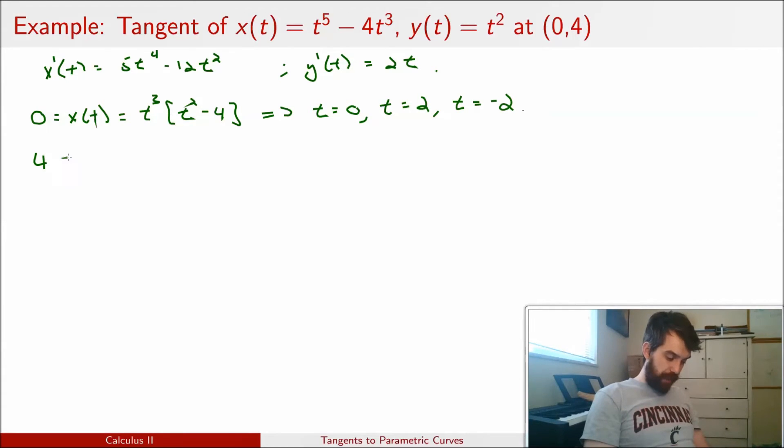Likewise, I want to set 4 equal to y of t, which of course is equal to t squared. And if 4 is equal to t squared, that implies that t is equal to 2 or it implies that t is equal to minus 2. Now if I compare these two things, both of the two constraints I have, the x and y-coordinate, both have that t could either be equal to 2 or minus 2.